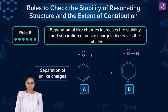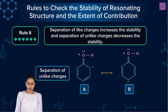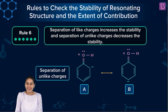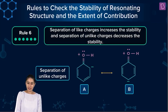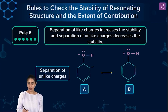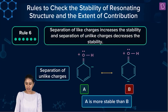In structures A and B, both are polar — oxygen has a positive charge and carbon has a negative charge in both, with the same number of covalent bonds. The only difference is that in A, the plus and minus are closer to each other, while in B they are farther apart. Since separation of unlike charges decreases stability, A is more stable than B.